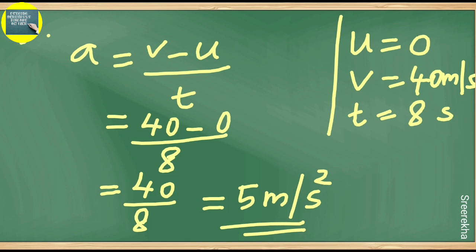Initial velocity u equals 0 (starts from rest). Final velocity v equals 40 meters per second. Time t equals 8 seconds. Acceleration a equals change in velocity divided by time: a equals v minus u divided by t, that is 40 minus 0 divided by 8.